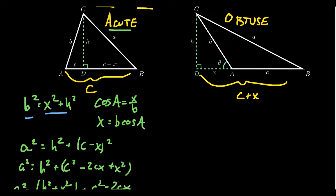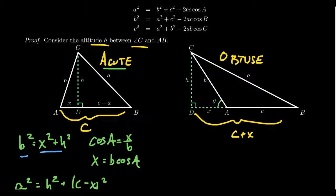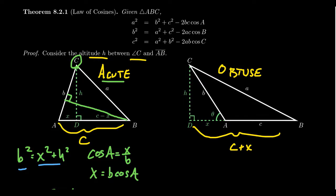We obtained that by focusing on angle A. If we had focused on angle B instead, we would get the second version of the law of cosines: b squared equals a squared plus c squared minus 2ac cosine of B. If we focused on angle C, we get the last version: c squared equals a squared plus b squared minus 2ab cosine of C. This is, of course, for an acute triangle.